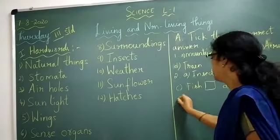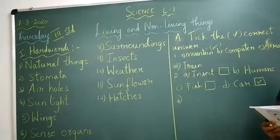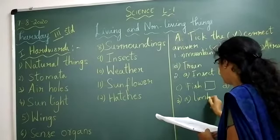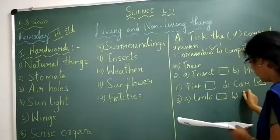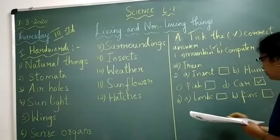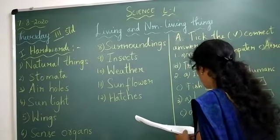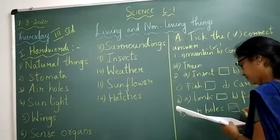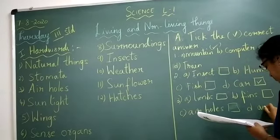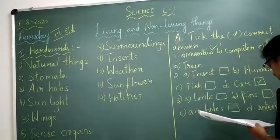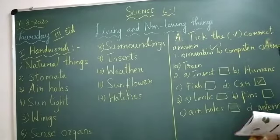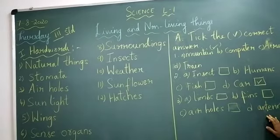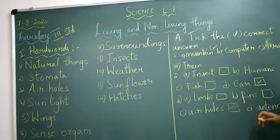Third one: fish moves with the help of. The options are: A — limbs, B — fins, C — air holes, D — antenna. Fish moves with the help of limbs, fins, air holes, or antenna. Which is the correct answer? Fins is the correct answer.